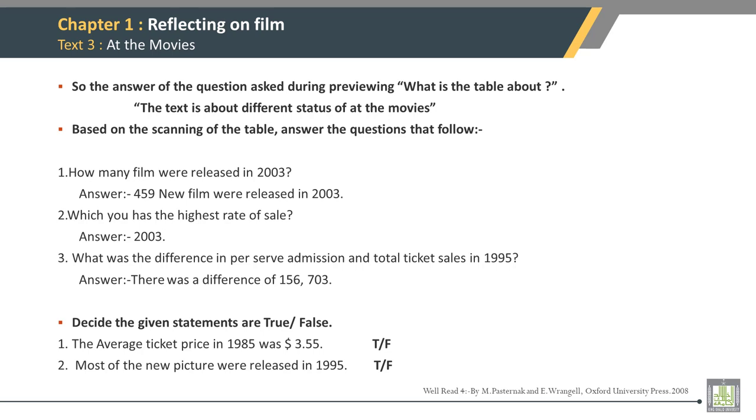Which year has the highest rate of sale? Answer: 2003. What was the difference in per-serve admission and total ticket sales in 1995? The answer is there was a difference of 156,703.